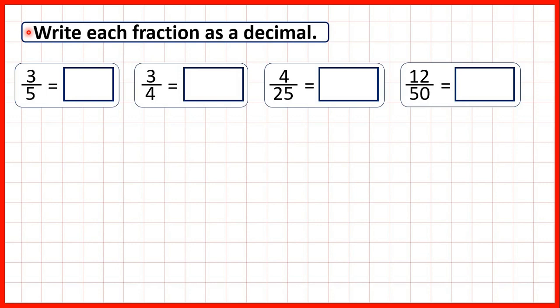We need to write each fraction as a decimal, and the way to do this is to remember that some fractions have decimal place values. The first digit after the decimal point is the tenths digit, and the second digit after the decimal point is the hundredths digit. So we can find equivalent fractions for the fractions we have here, with a denominator of either ten or a hundred, because then we'll be able to write them as a decimal.